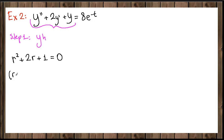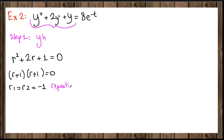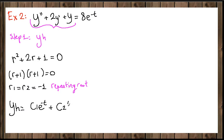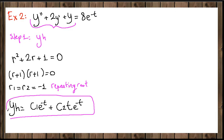Factoring gives (r + 1)(r + 1) = 0, so our roots are both negative 1: r1 equals r2 equals negative 1. These are repeating roots. For repeated roots we use: y_h = c1·e^(r·t) = c1·e^(-t) plus c2·t·e^(-t).